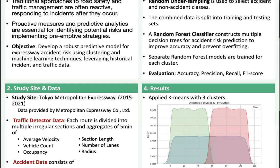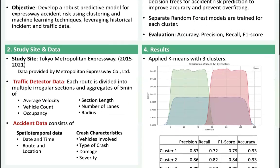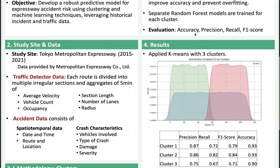Coming to the study site and data, our study focuses on the Tokyo Metropolitan Expressway with data collected from 2015 to 2021. We received traffic data from the Metropolitan Expressway Company Limited. The data includes traffic detector readings on road segments called sections, including average velocity, vehicle count, and occupancy aggregated in 5-minute intervals.